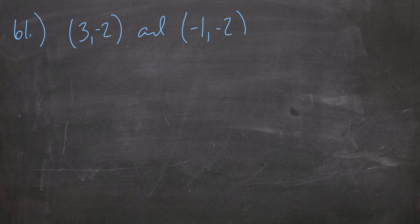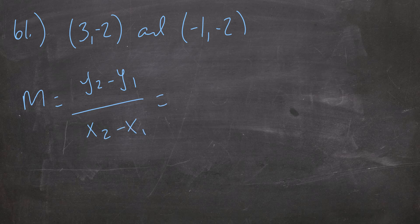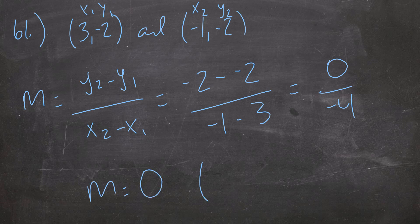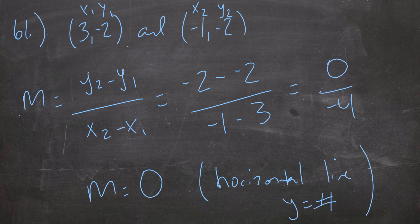61: we have 3, negative 2 and negative 1, negative 2. Same thing — find the slope. m equals y2 minus y1 over x2 minus x1. I get negative 2 minus negative 2 all over negative 1 minus 3, which is 0 over negative 4, so m equals 0. That's going to be a horizontal line — y equals some number. I could say y equals negative 2. That's it for 61.